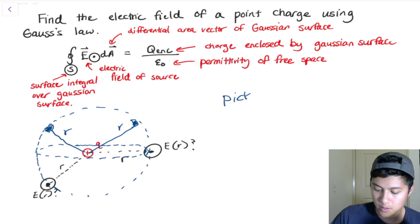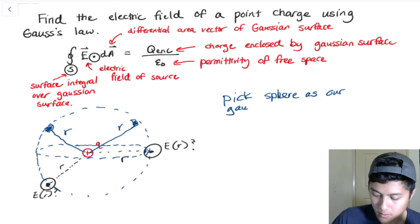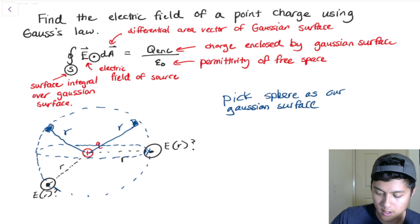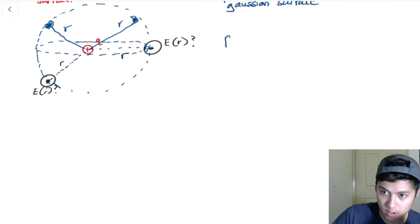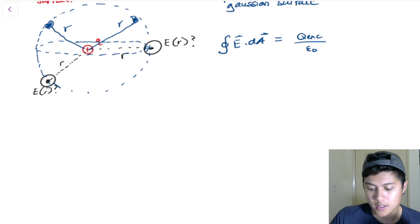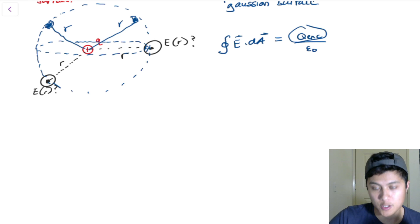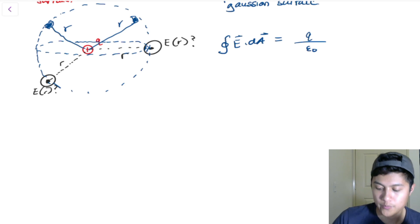We're going to pick a sphere as our Gaussian surface with a radius of r. Let's rewrite Gauss's law: the surface integral of E·dA equals the charge enclosed over epsilon naught. The charge enclosed is just Q, so the right-hand side is simply Q over epsilon naught.